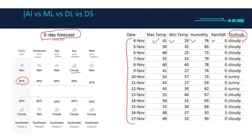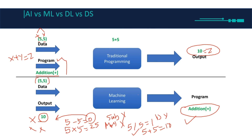The machine learning finds a pattern: if max temperature was 43, minimum was 27, humidity was 54, and rainfall was 0, then there's a high chance that day will be sunny. Sometimes it's wrong, but most of the time it's correct. That's the same concept as the earlier example, and that's how machine learning is different from traditional programming. I hope that was clear — see you in the next video.